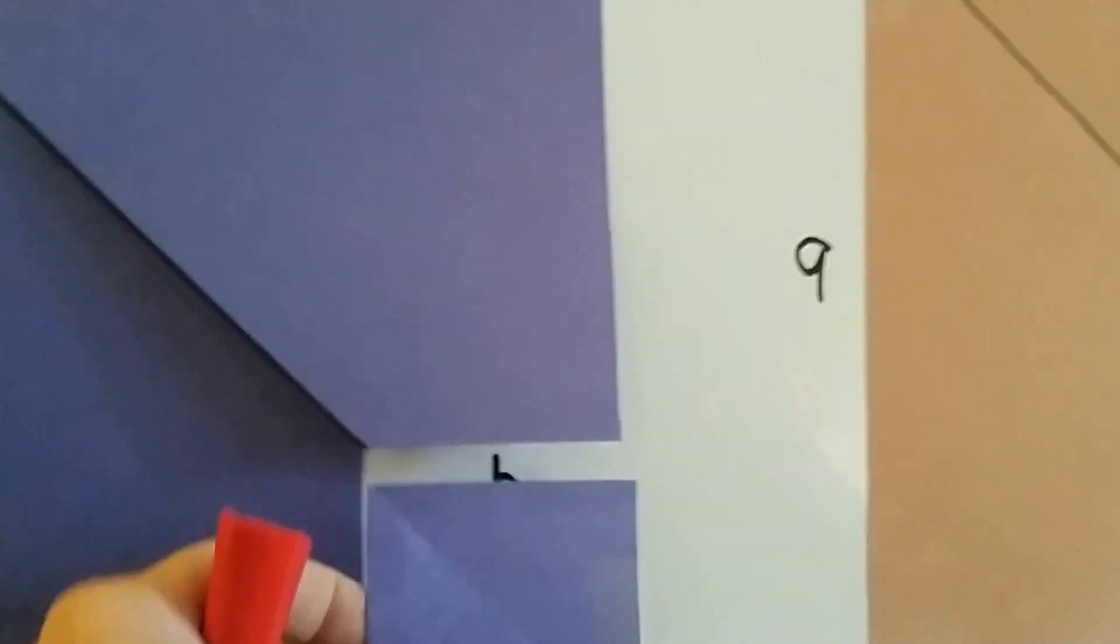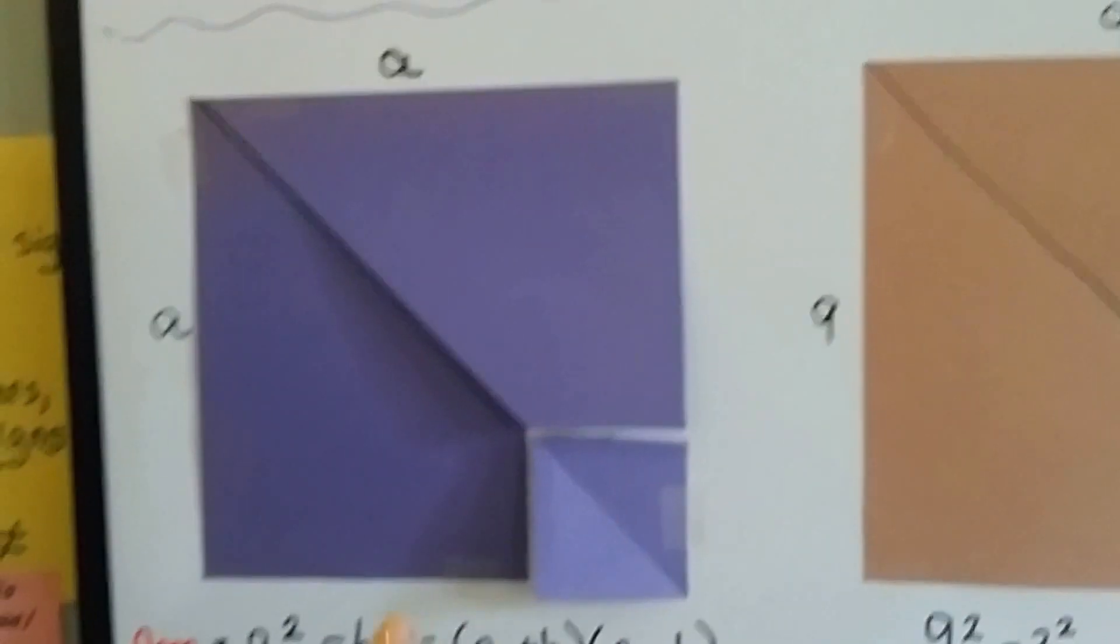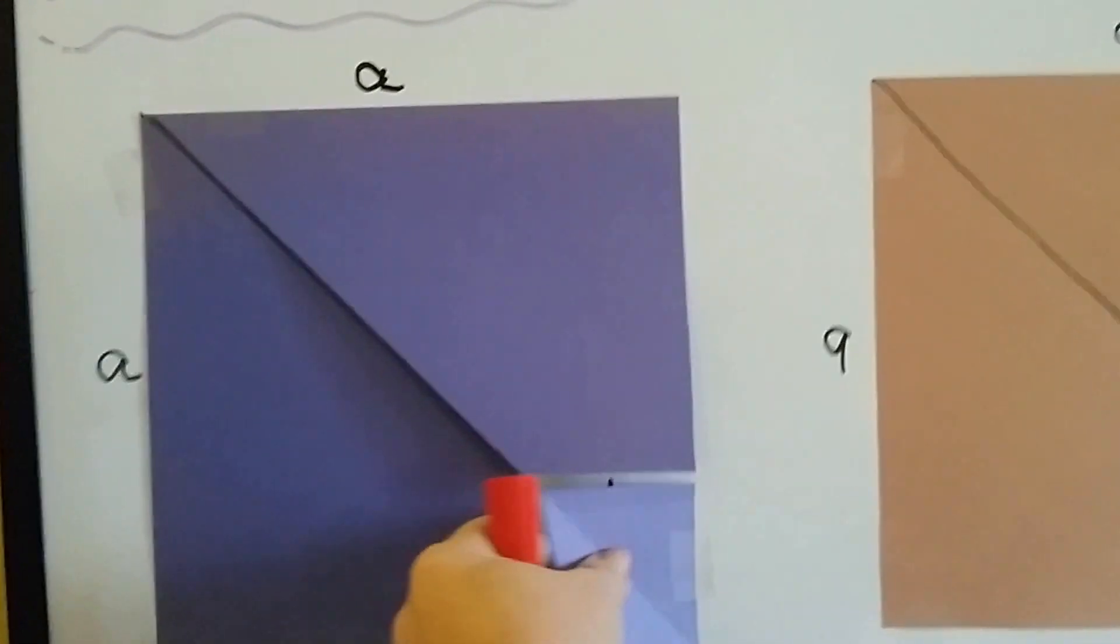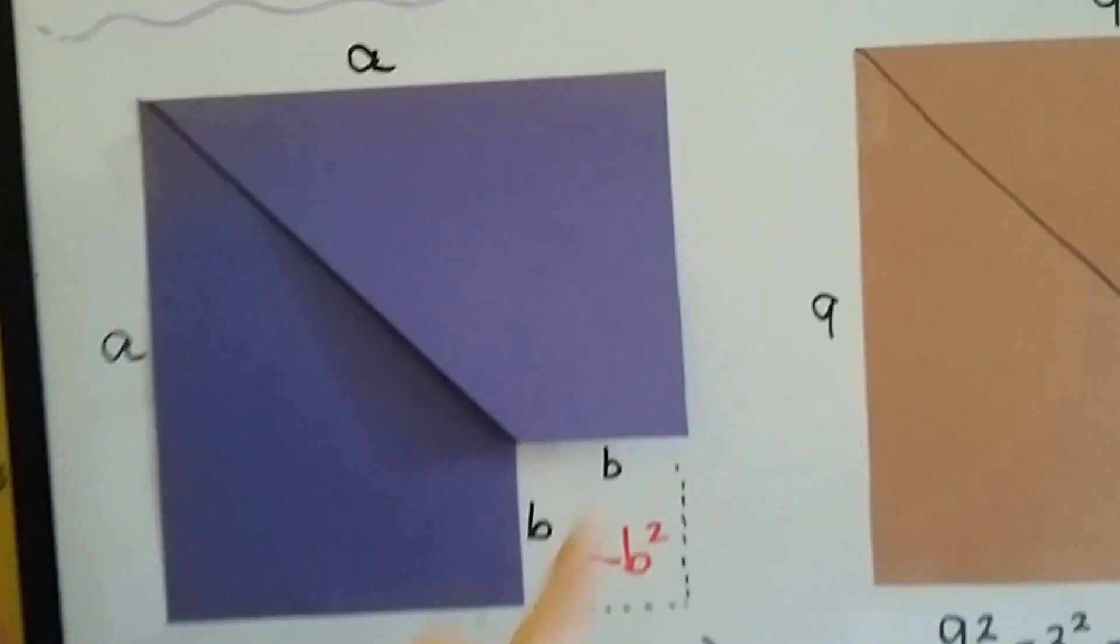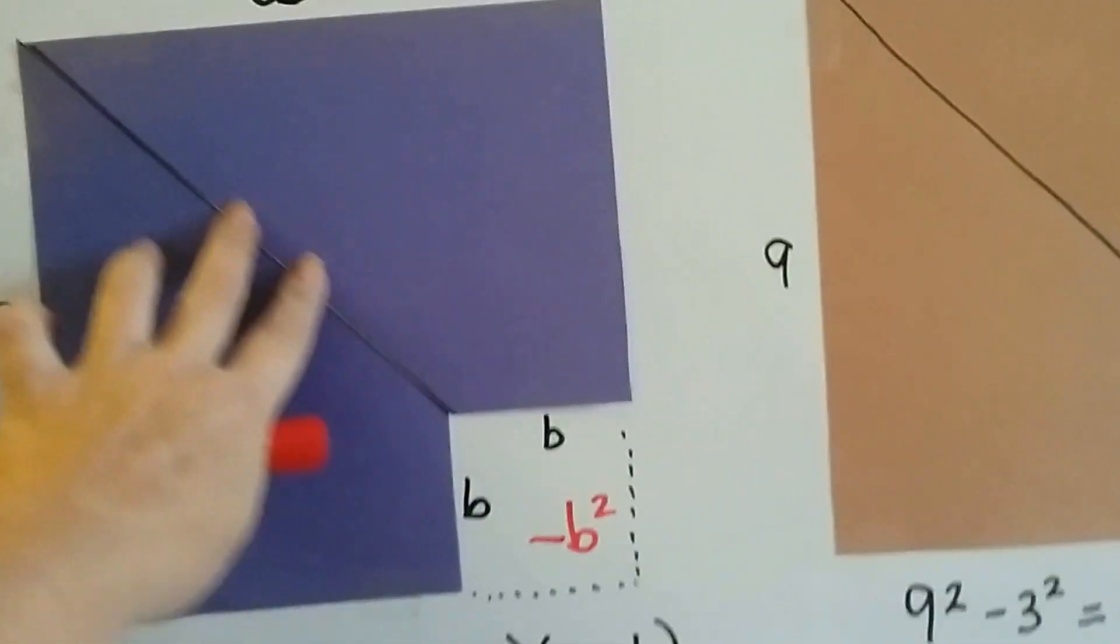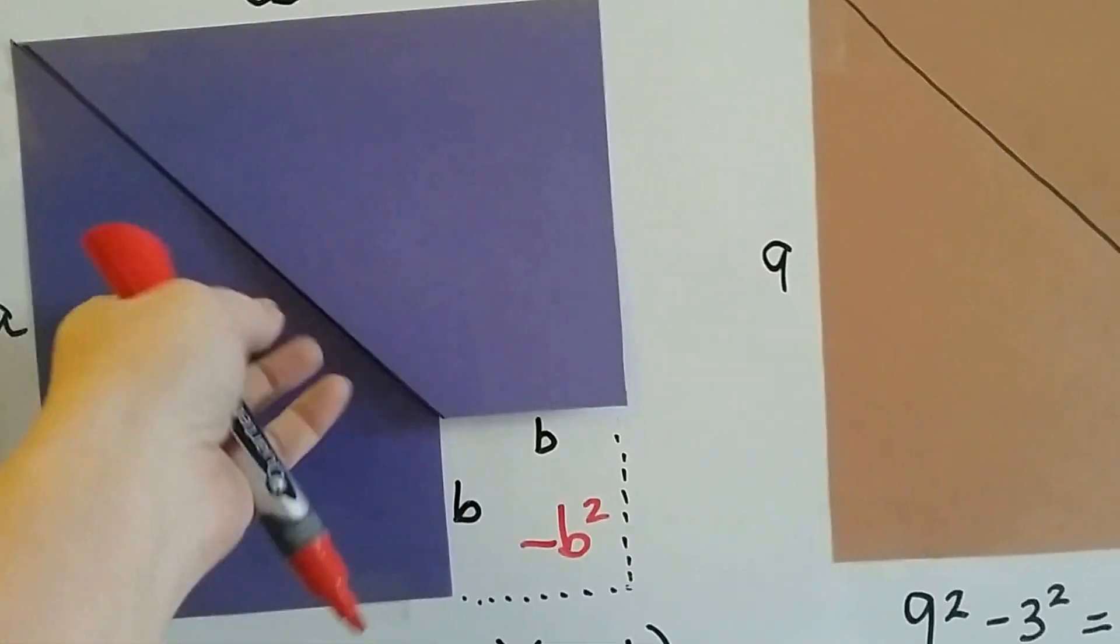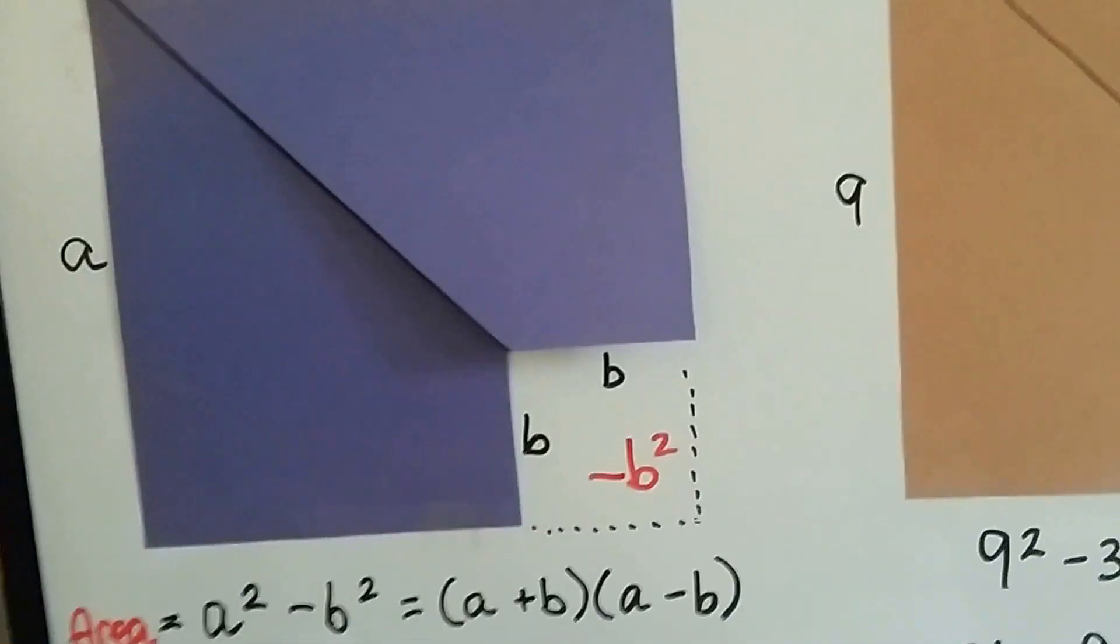Now I'm going to show you something even cooler. So we had our little piece here. And this was the entire square. And we took this piece away. So now, what I did was, I cut this on an angle right here, and I've got two separate pieces. See how these are two separate pieces?